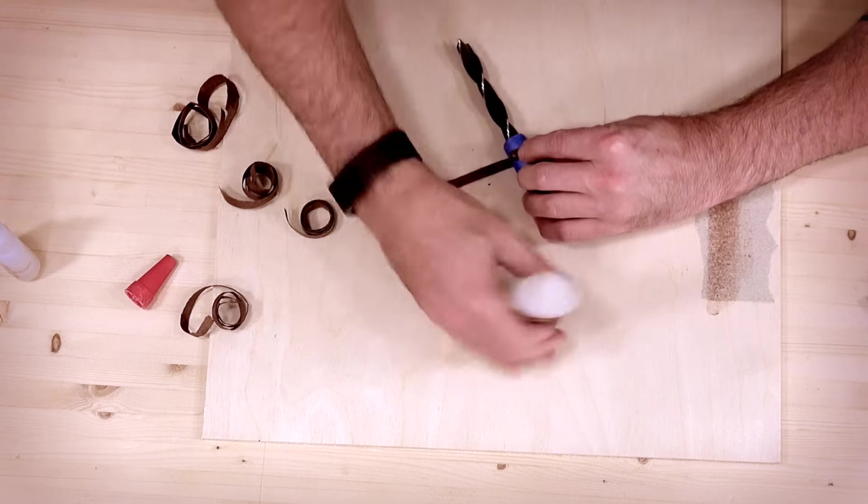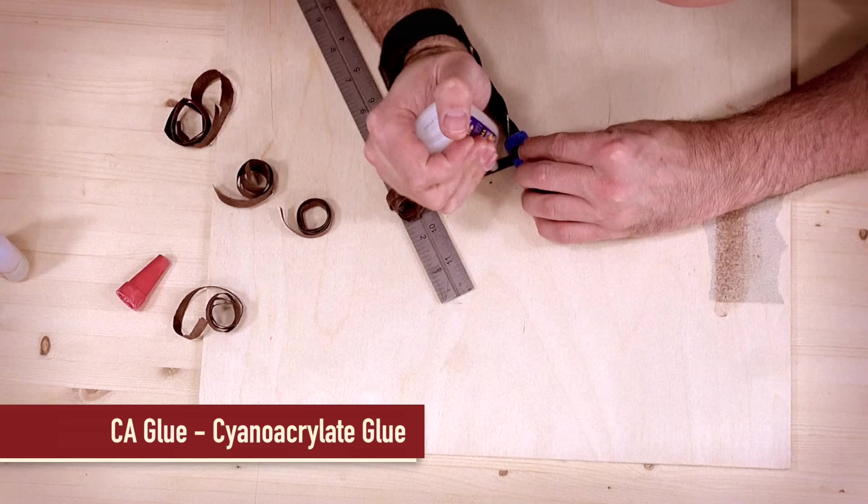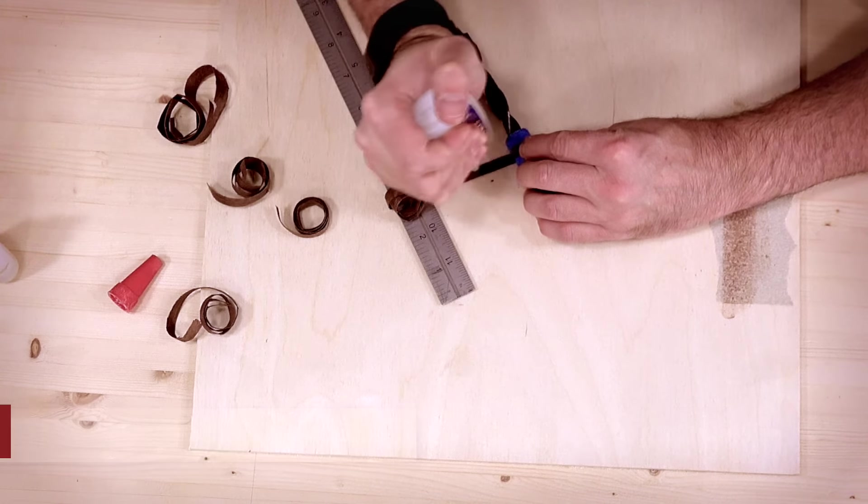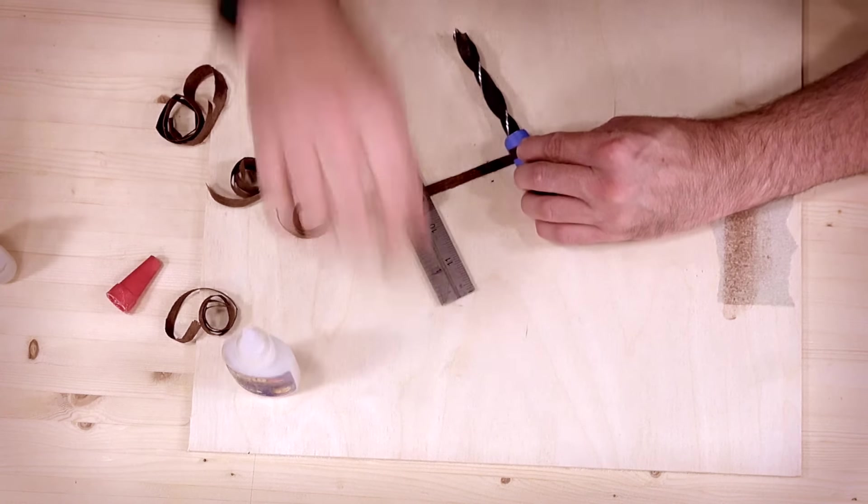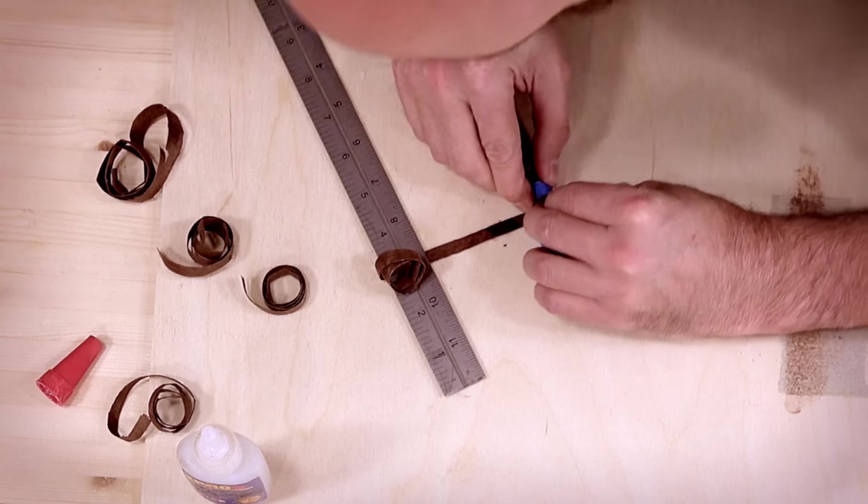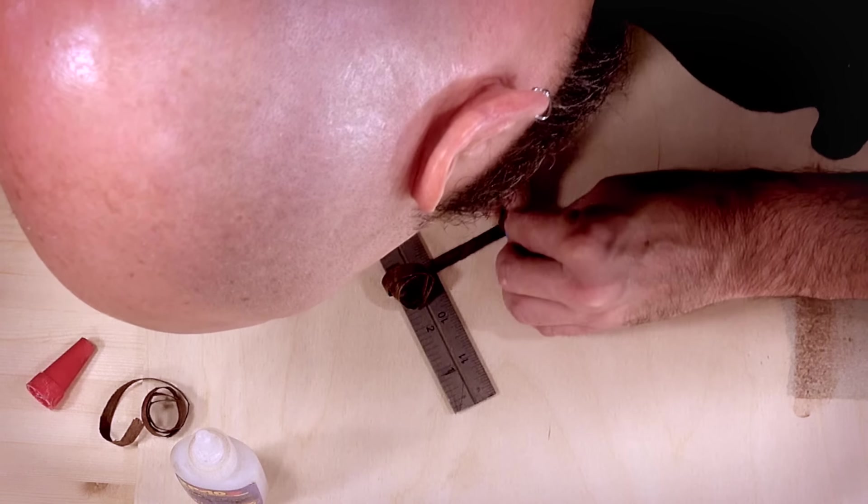Now, it's just a matter of wrapping the veneer around our size blank and adding CA glue between the layers. The metal ruler seen here is used to hold the remainder of the piece out of the way. Work just a small section at a time, winding it as tight as you can and holding it in place until the glue sets.